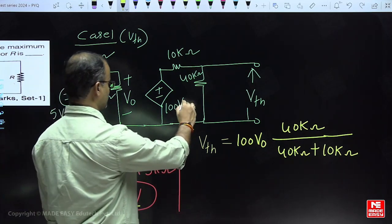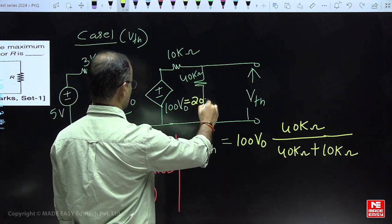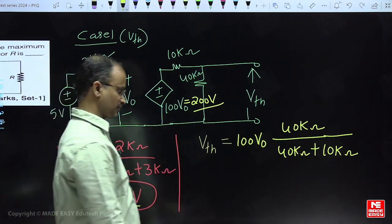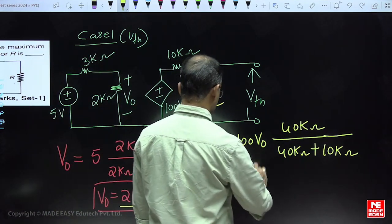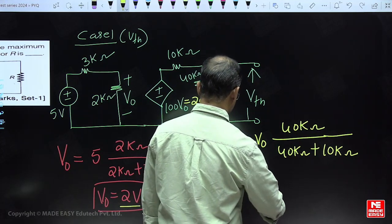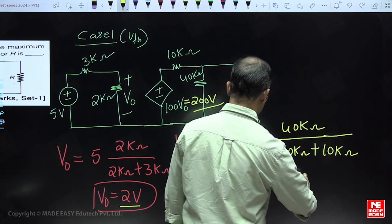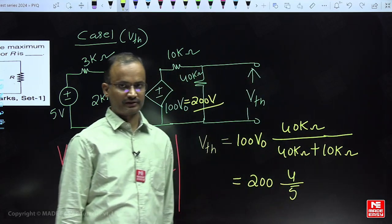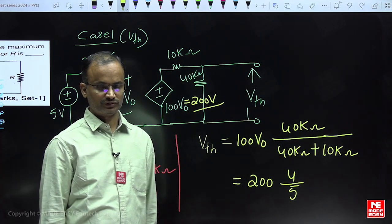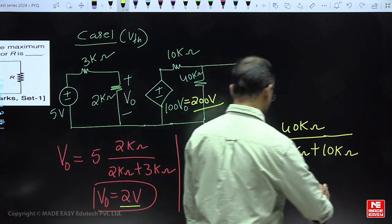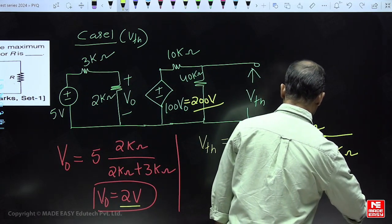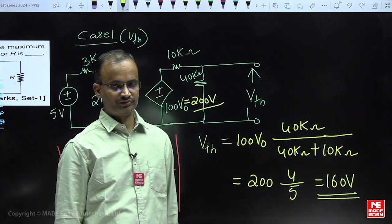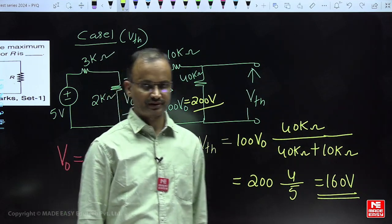If V_naught equals 2 volts, then the dependent source value equals 200 times V_naught, which is 200. That means V_naught equals 2 volts, giving a dependent source value of 200. If you simplify, Vth is equal to 160 volts. Vth is now completed.